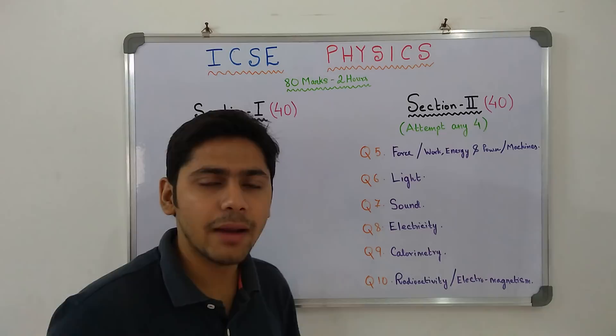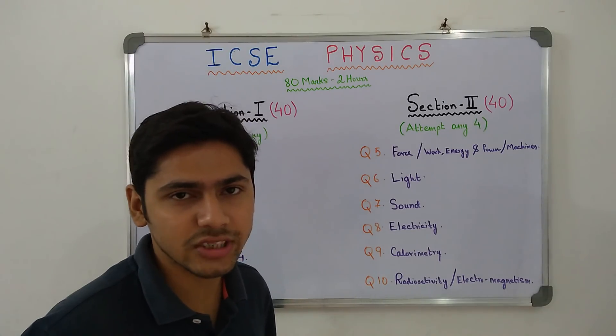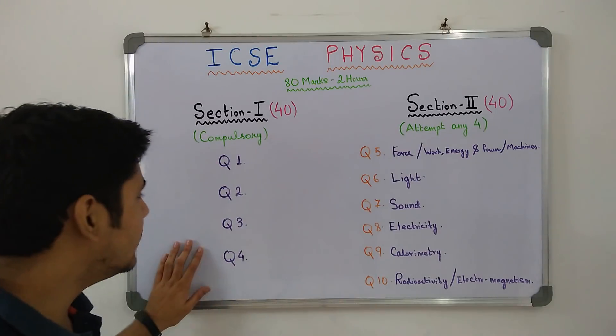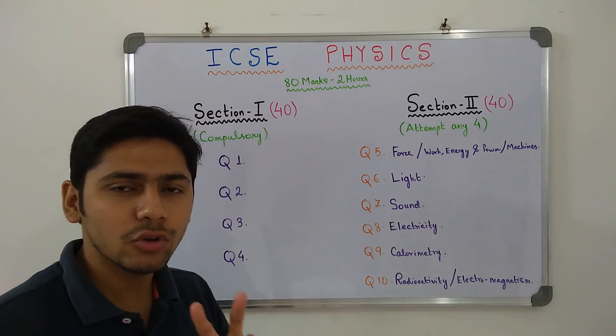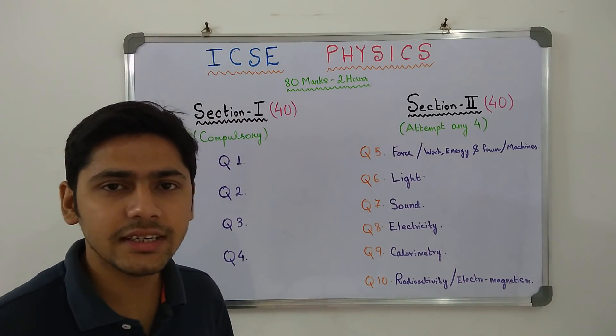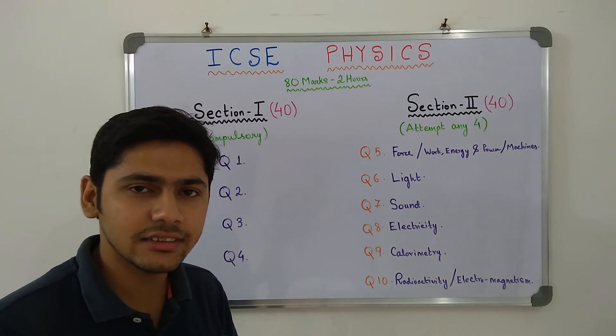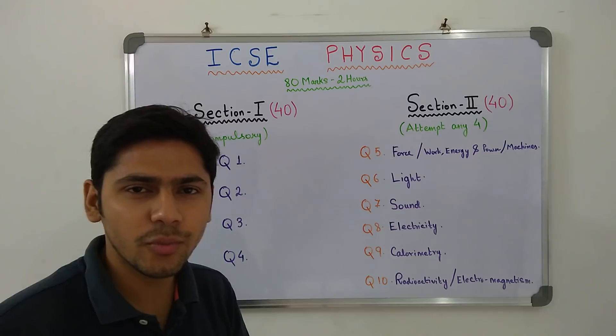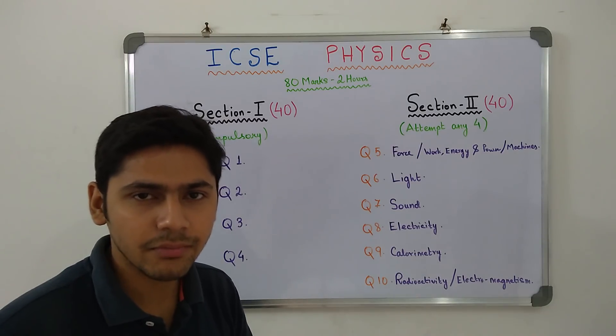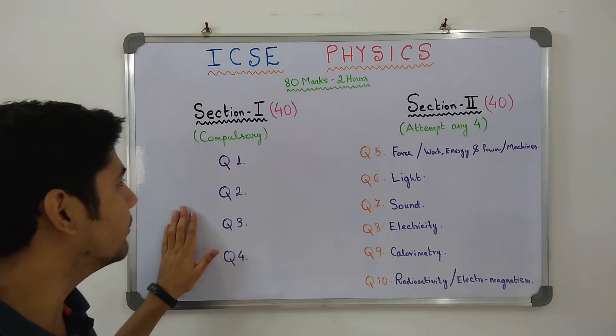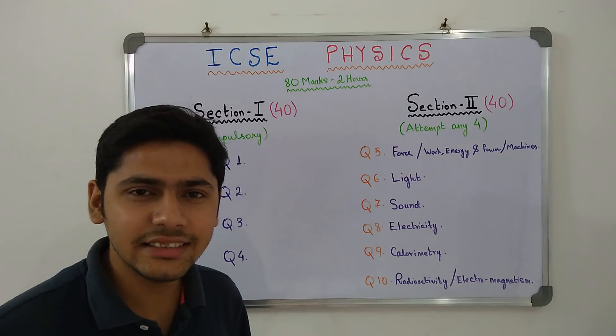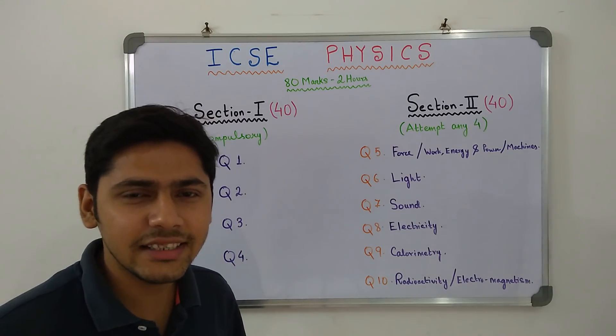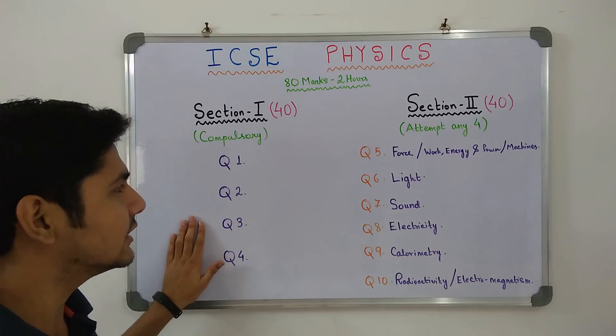That was regarding the pattern. Now, questions, which type comes in this question paper? Section 1 may have 1 mark or 2 marks questions. Question which type? Definitions, SI units, one word answers, short numericals and short diagrams. These questions come in section 1. Questions are particularly easy and if you have a concept clear, then you can easily score 40 out of 40 in this section.